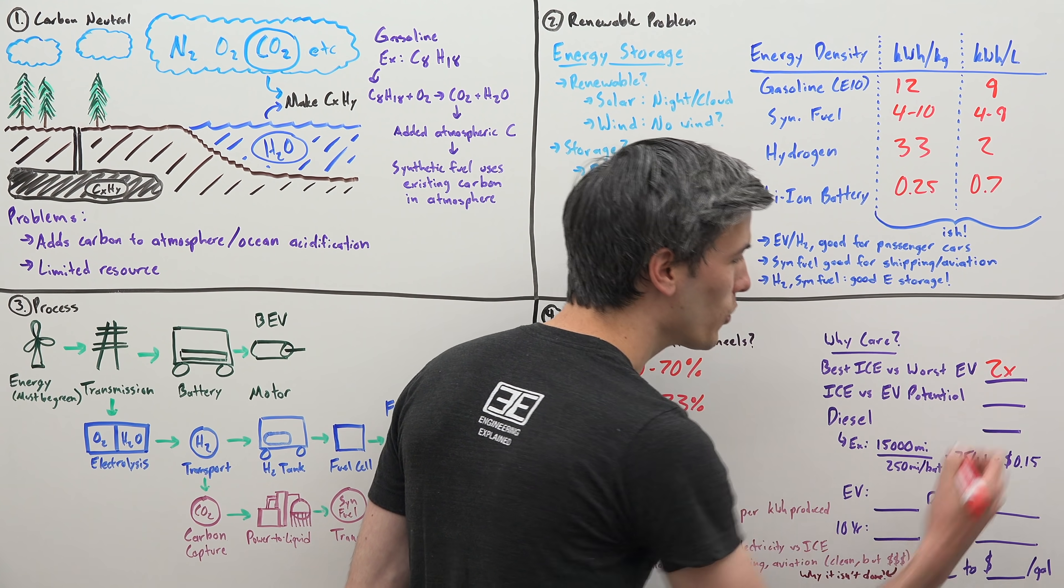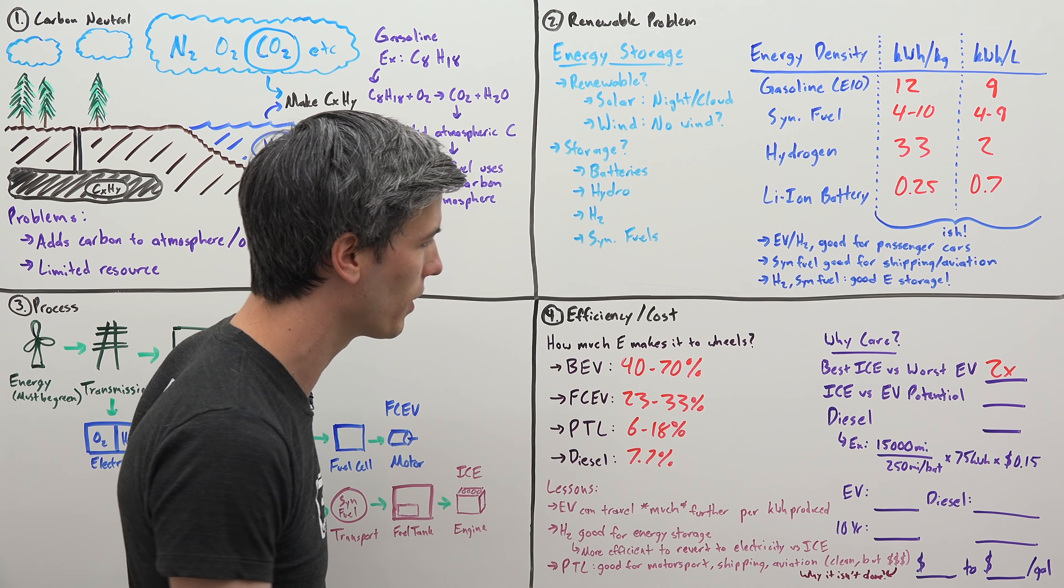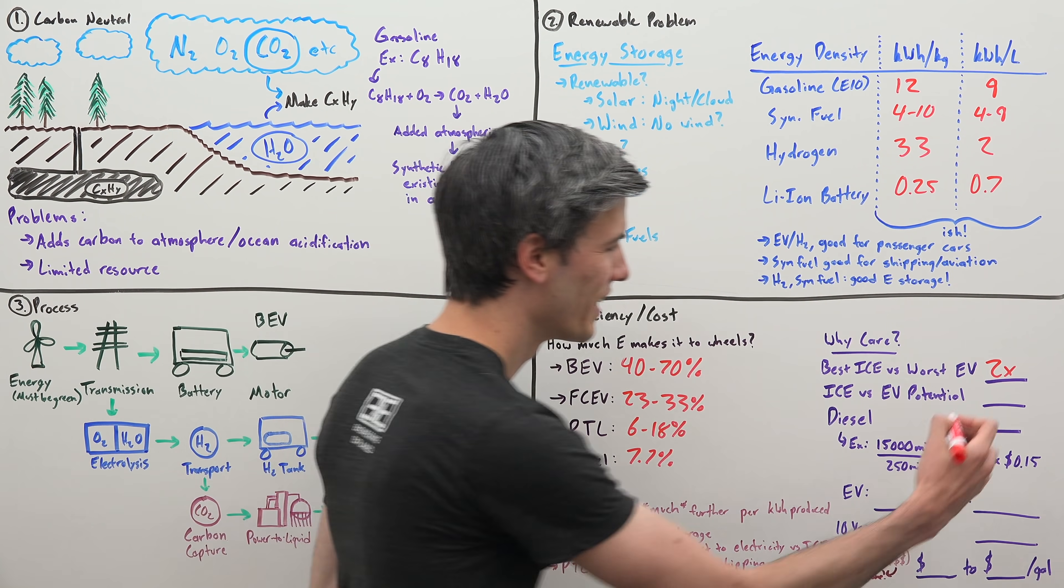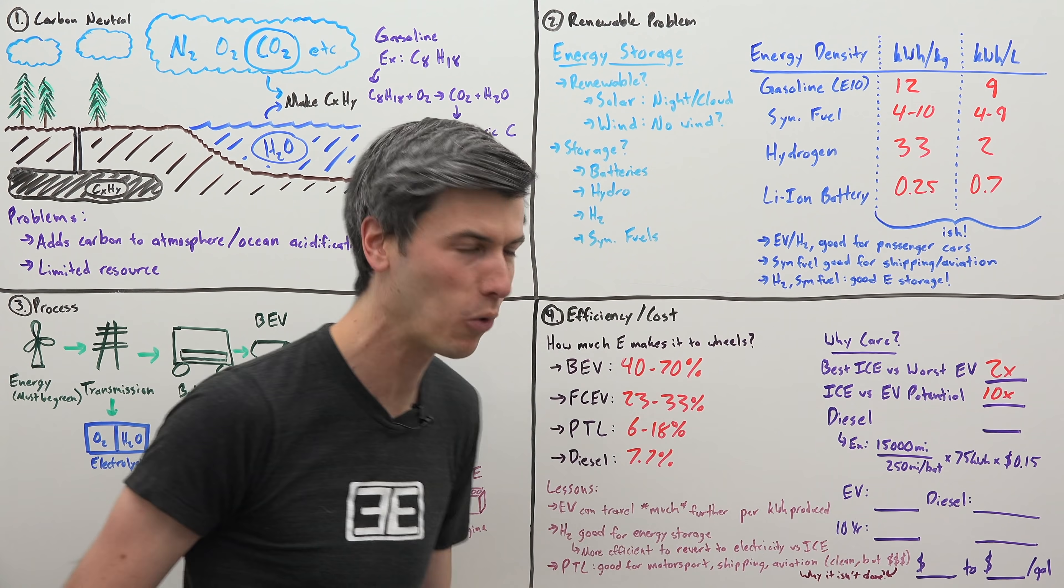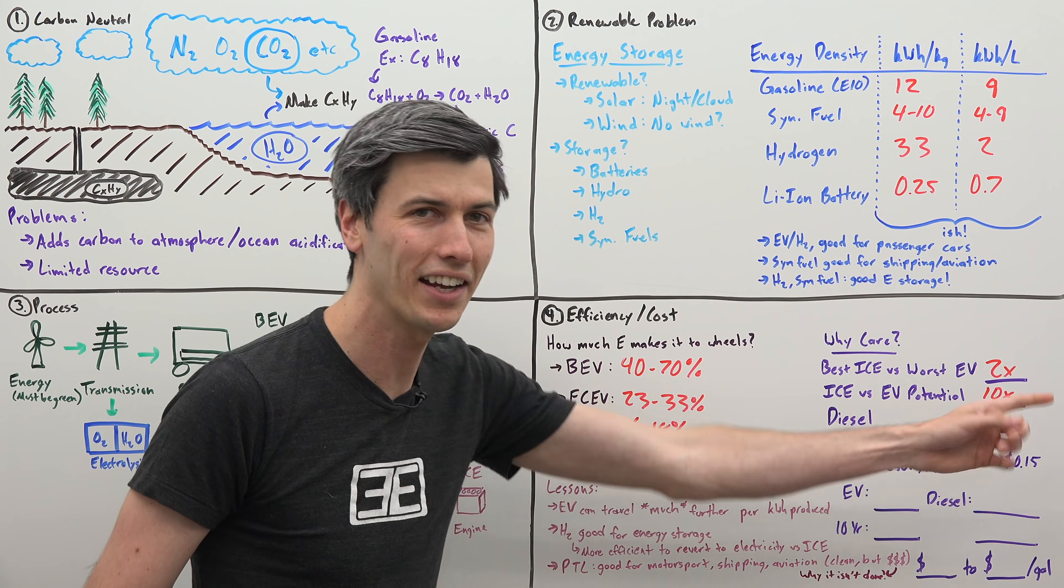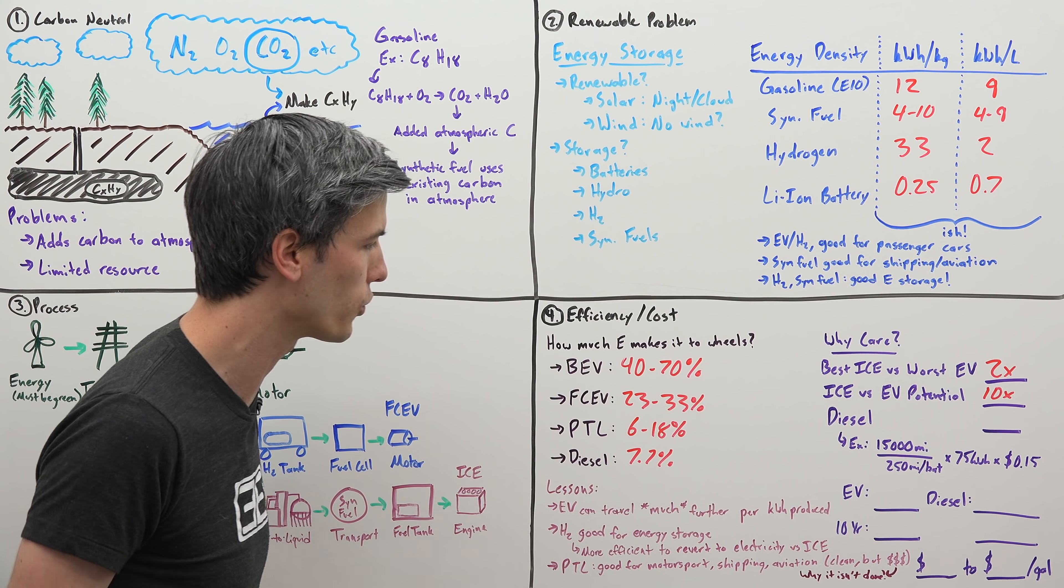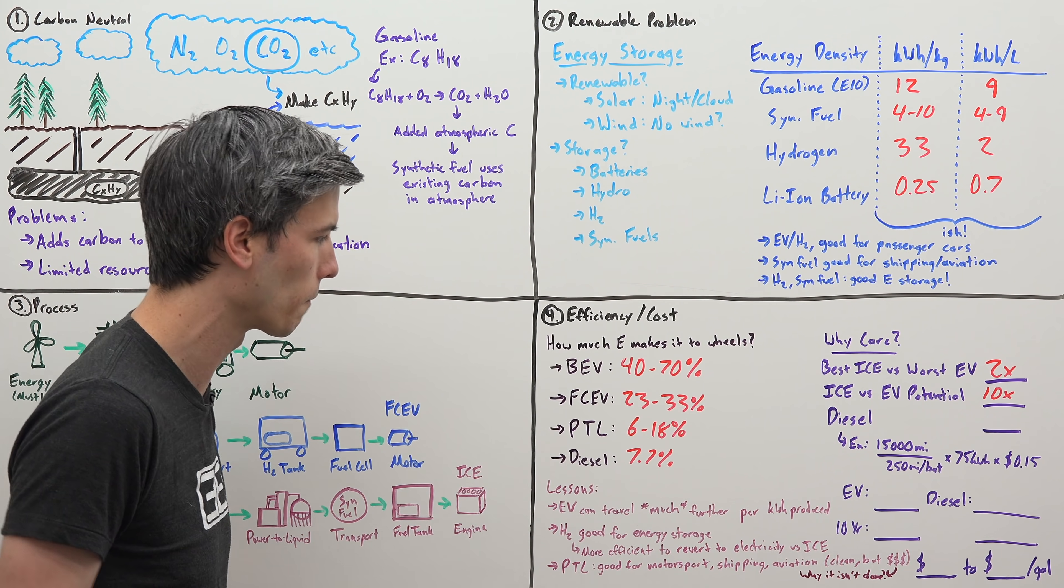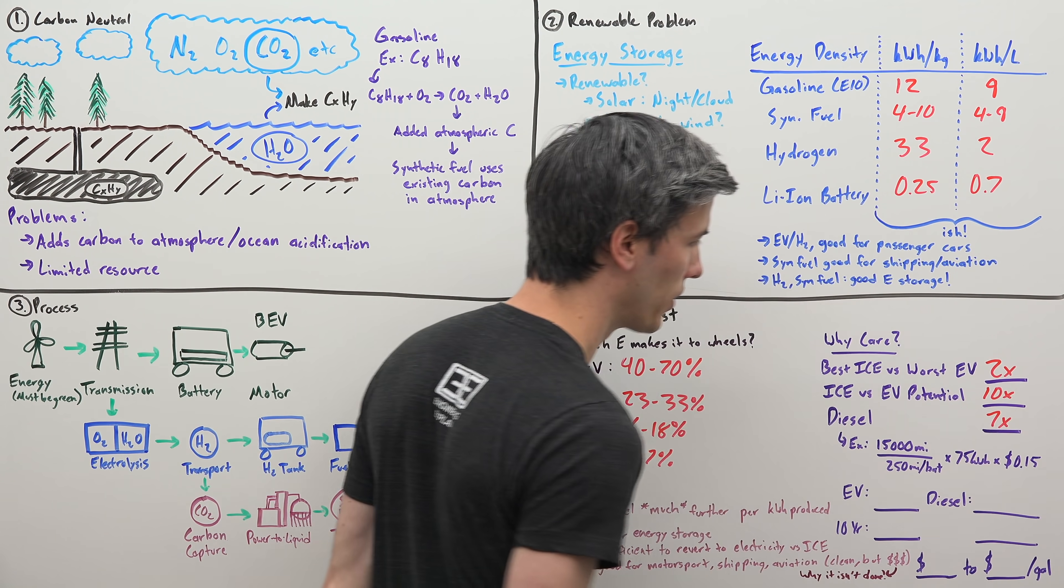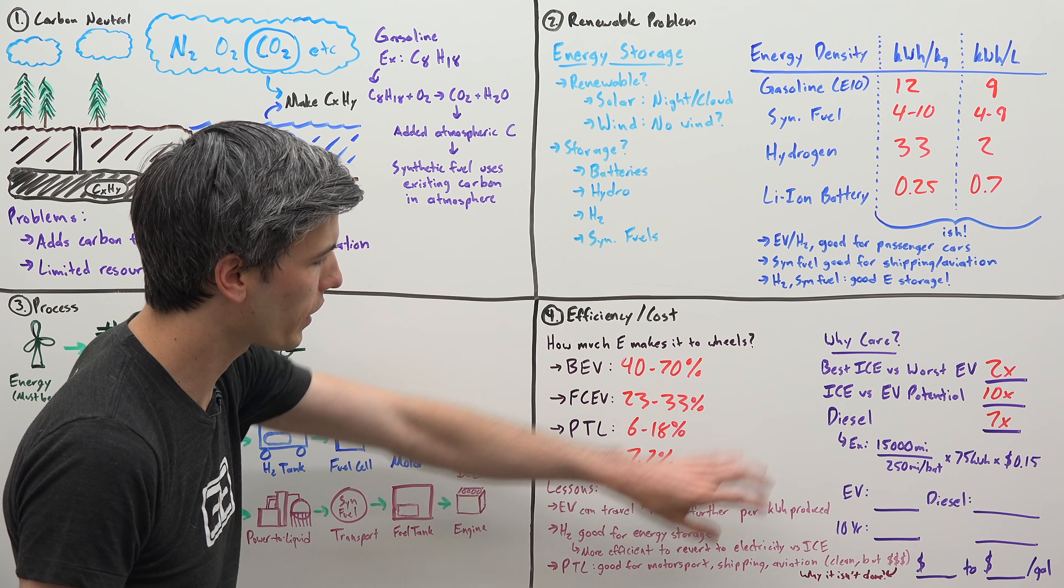This is a big problem. I found another study which said for diesel, this number is about 7.7%. If we look at the best internal combustion engine at 18% versus the worst electric vehicle, we still need over two times the energy to move that combustion vehicle the same distance. The potential is as high as 10 times the amount of energy required. This is insane. Best case, you need two times as much energy to travel the same distance. It could be as high as 10 times.